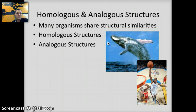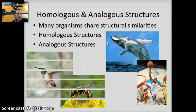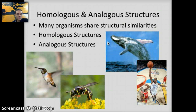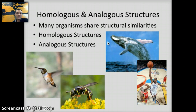Analogous structures are the opposite — although they are similar in function, they are different in their fundamental structures. The wings of an insect and the wings of a bird are very different in structure but serve the same function, suggesting they do not share a common ancestor.